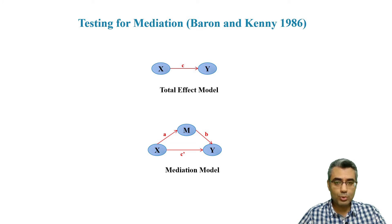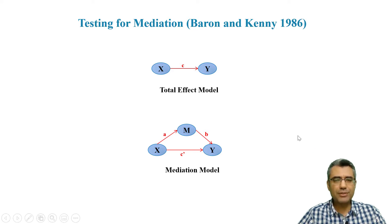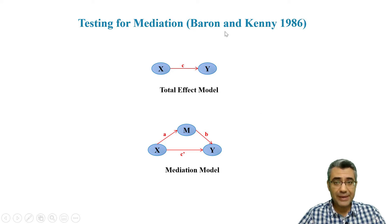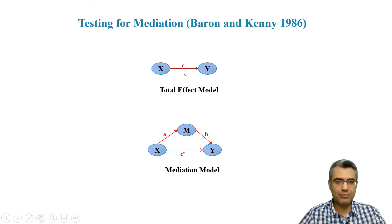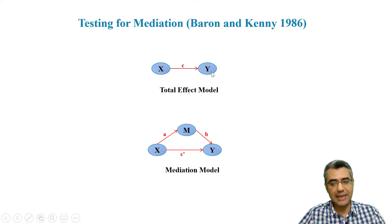In this video I'd like to show you how to test a mediation model — a model with mediators. There are different methods to test mediation, and all are derived from Baron and Kenny 1986. Baron and Kenny suggested that to test a mediation model, first we need to test whether there is a total effect — meaning the model without any mediator between the independent variable X and the dependent variable Y.